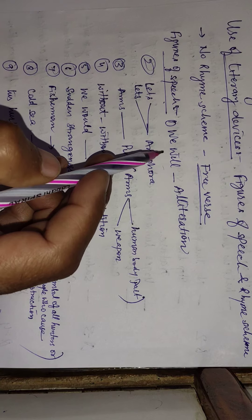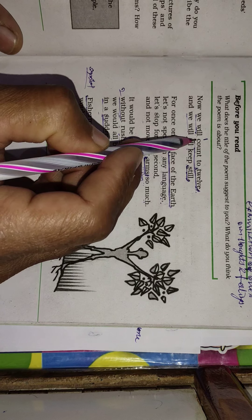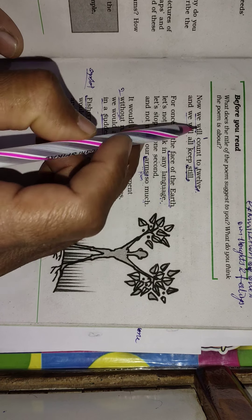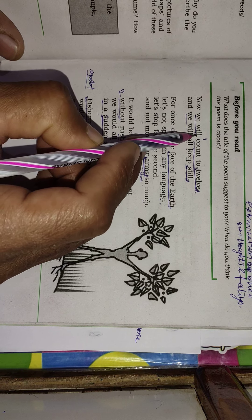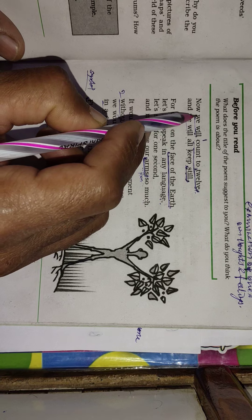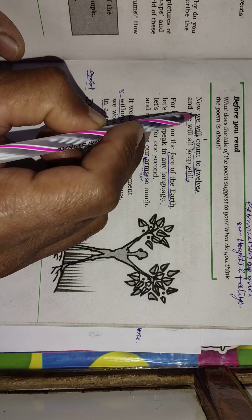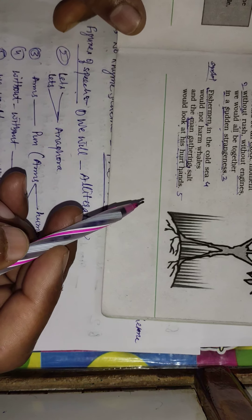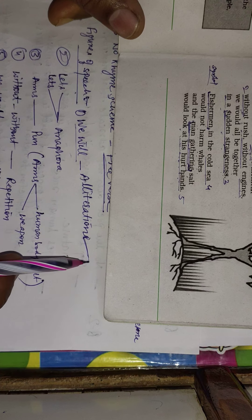The very first figure of speech employed is alliteration. In the line 'we will count to 12 and we will all keep still,' the W consonant sound produced by the letter W is repeated. So it is the alliteration figure of speech. 'We will' stands for alliteration.